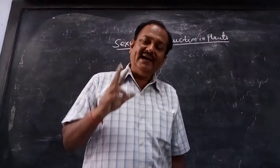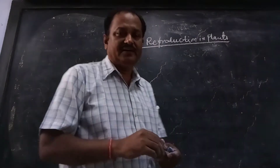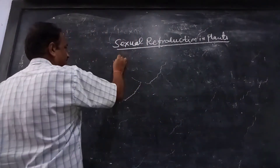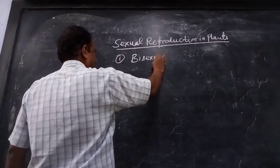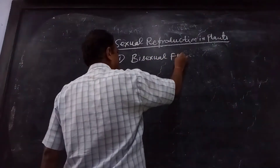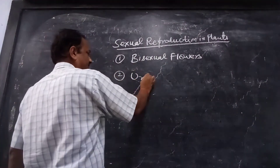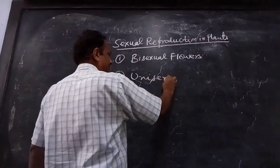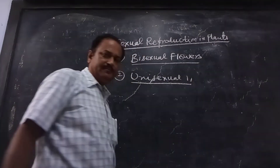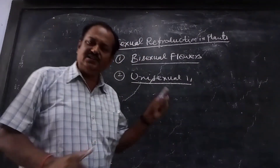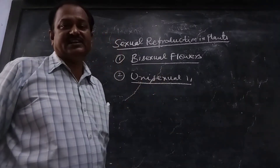Plants have two types of flowers. First is bisexual flowers, and second is unisexual flowers. These are the two basic types of flowers. Most of the plants have bisexual flowers.